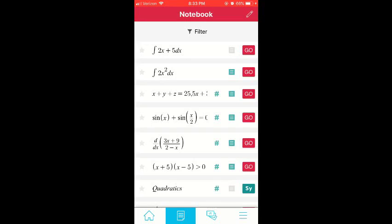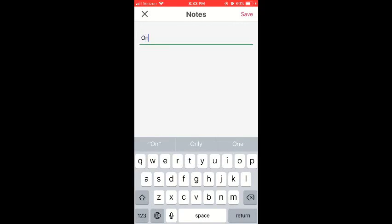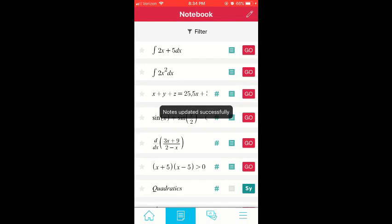To add a note to any problem, click the note icon right next to the problem and start typing any note. When you click save, the note icon turns green, meaning there is a note.